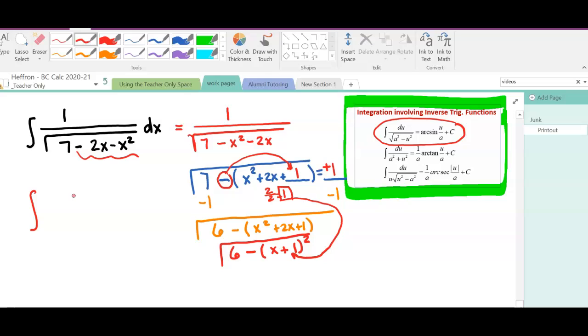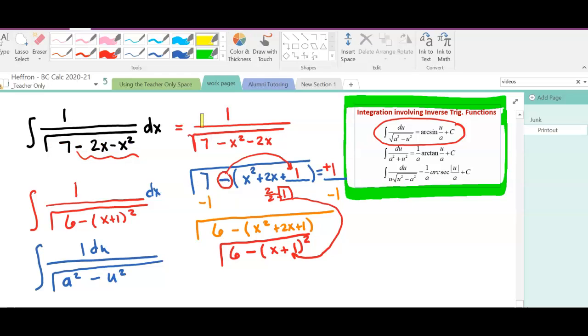We have the integral of 1 over 6 minus x plus 1 quantity squared. Now let's rewrite this arc sine. Well, they say integral, and of course we'd have a dx here, integral of 1 du over the square root of a squared minus u squared. Well, hopefully you can see then, hey, here's my 6. Here's my something squared.